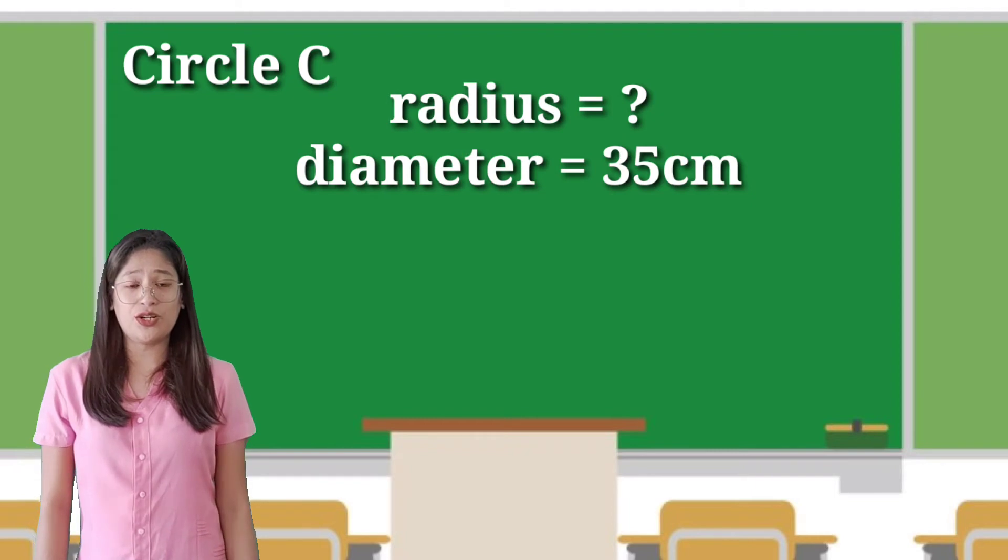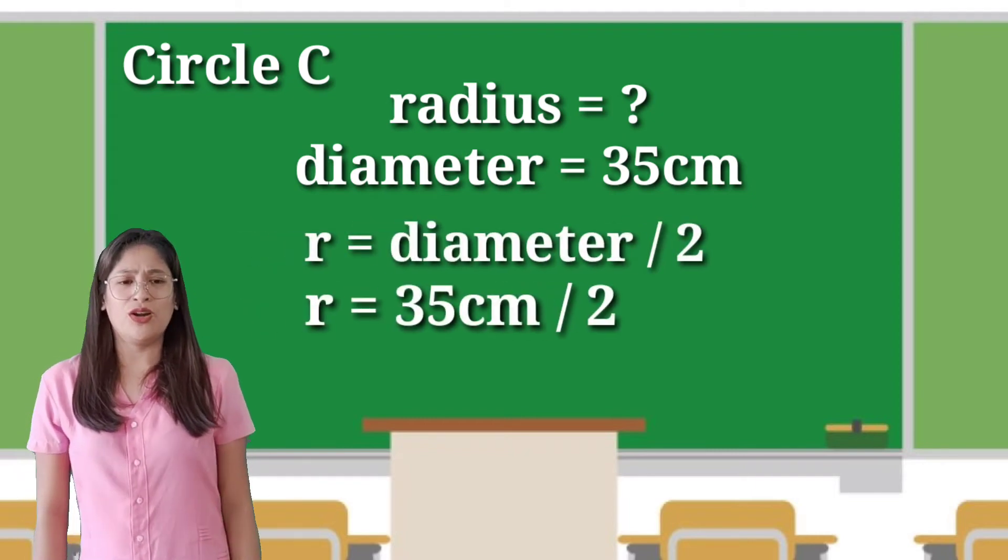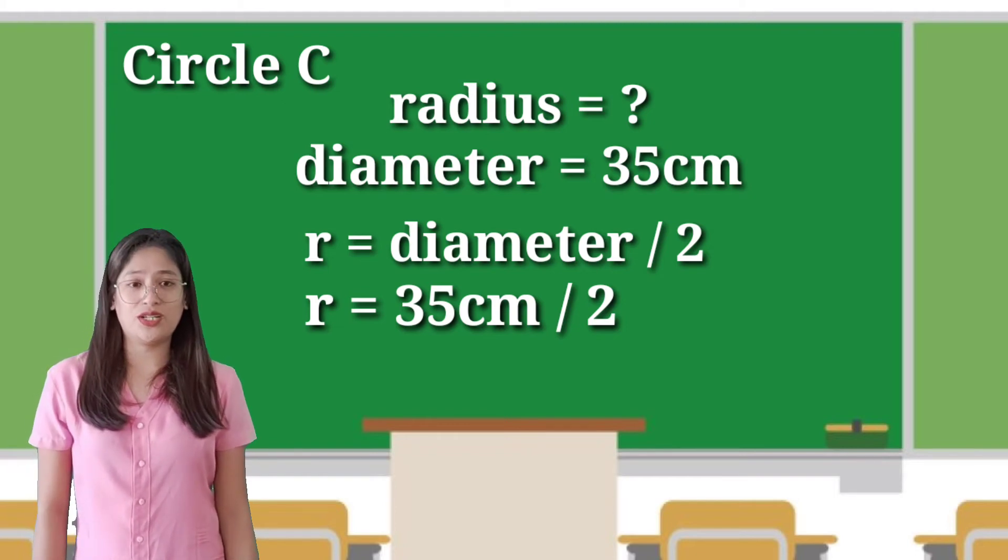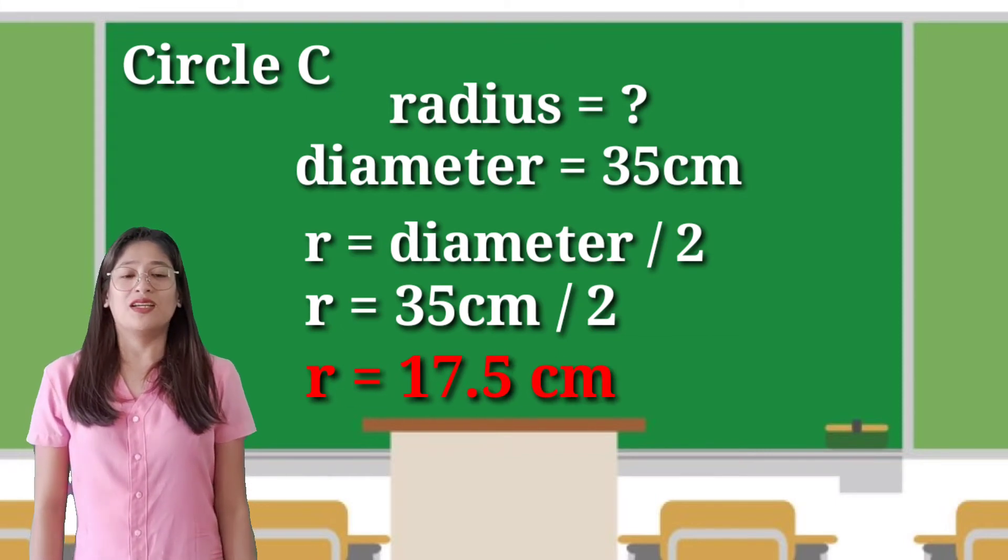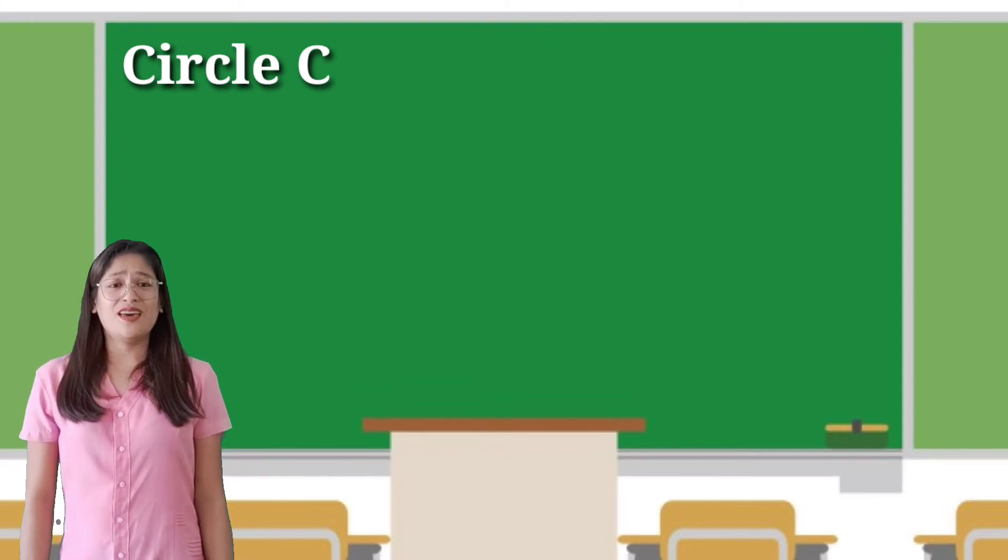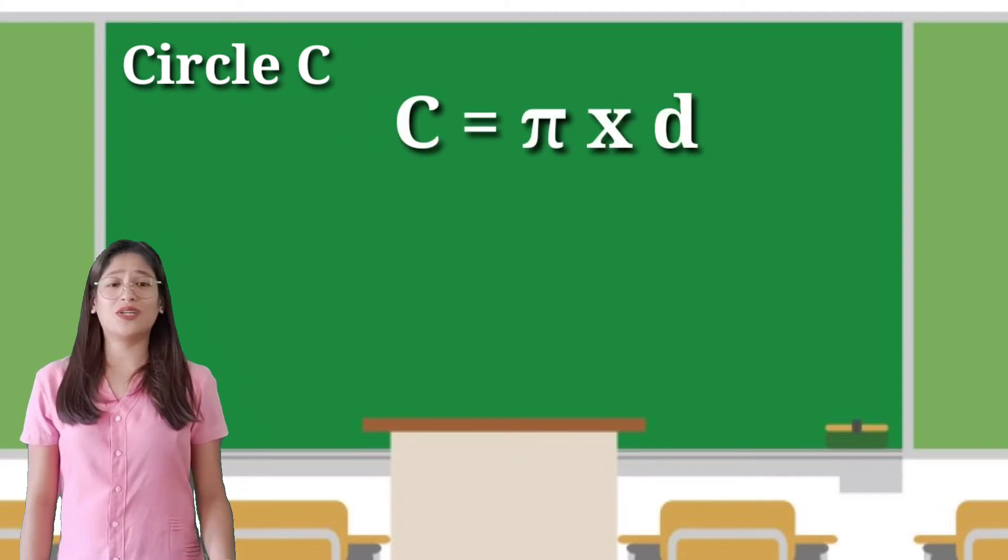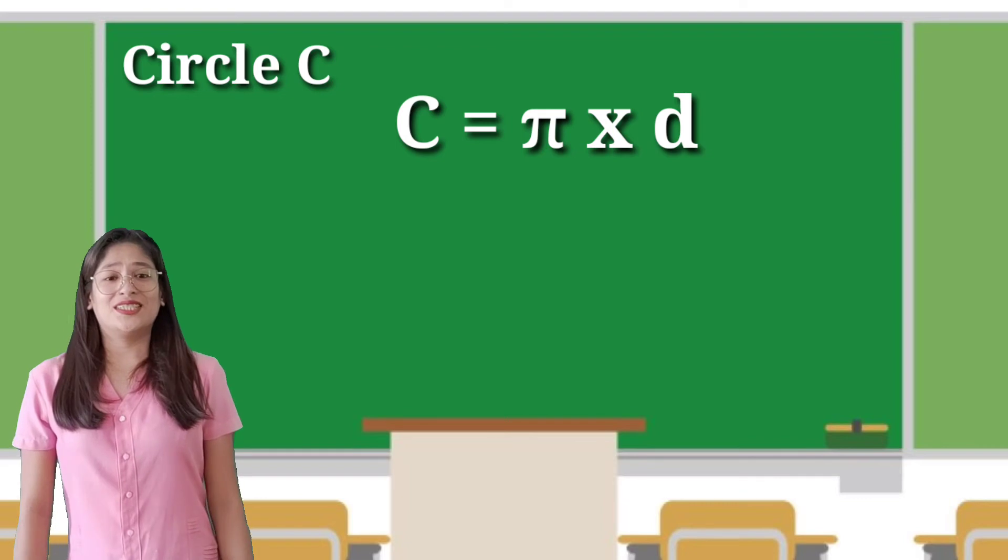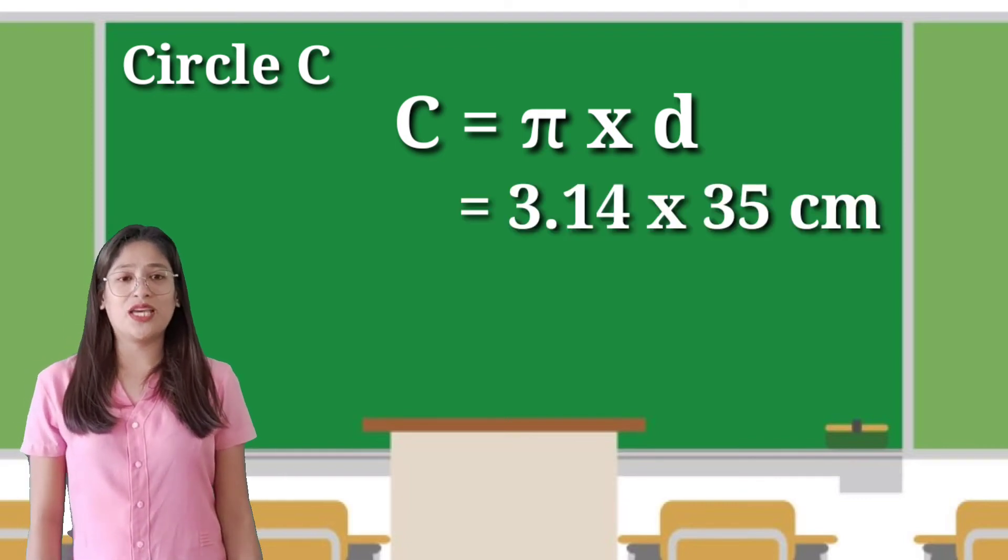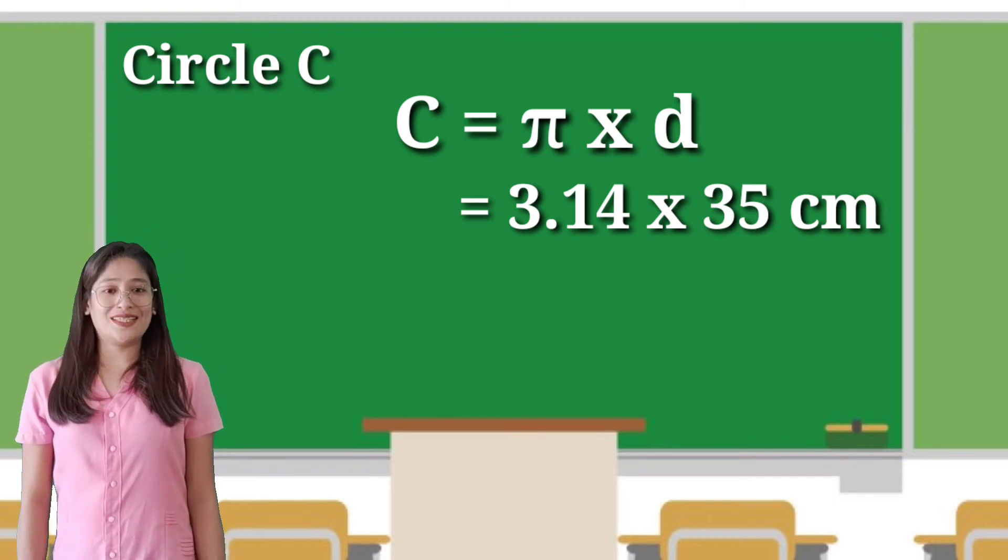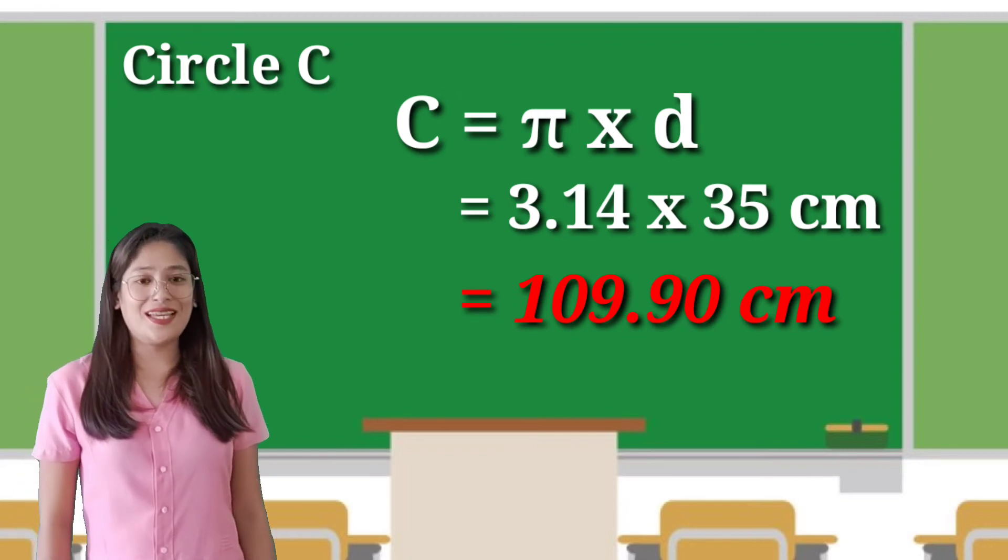For circle C, the given is the diameter. To get the radius, we will divide the diameter, which is 35 cm, by 2. We will get 17.5 cm. Then we will use the formula: circumference equals pi times diameter. 3.14 times 35 cm gives us the circumference, which is 109.90 cm. Did you get it?